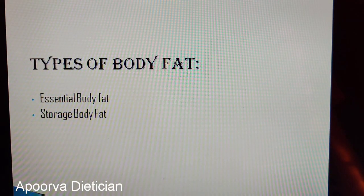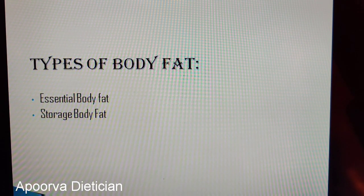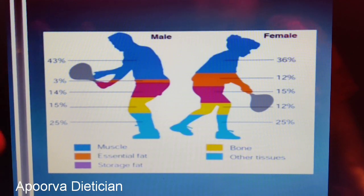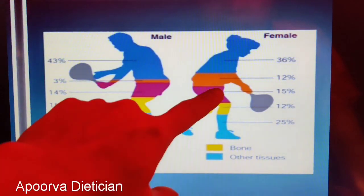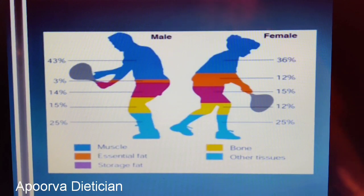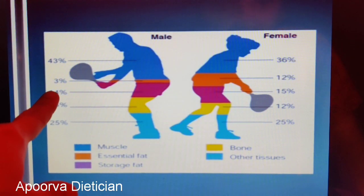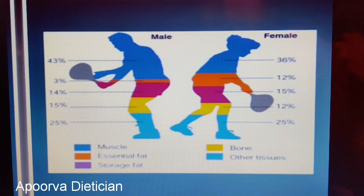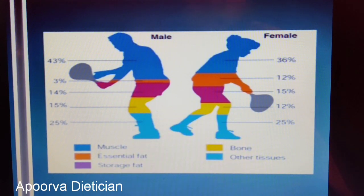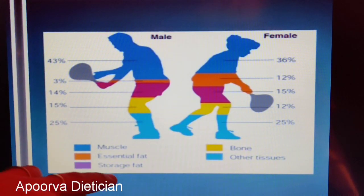Body fat is usually of two different types: essential body fat and storage body fat. In males, the essential body fat is around 3%, whereas in females it is 12%. Essential body fat is really important and cannot be reduced. Storage fat in males is 14%, whereas in females it is 15%. Females require a little more essential fat because it is stored in areas like the breasts, hips, and thighs — that's why women usually have a higher percentage of essential fat.